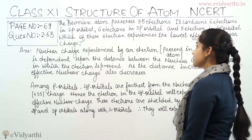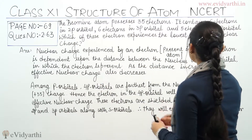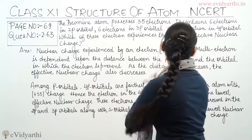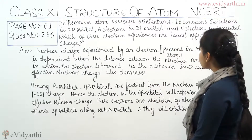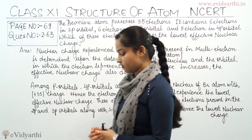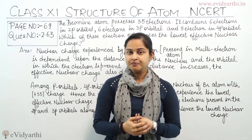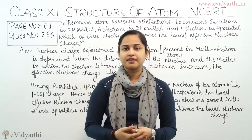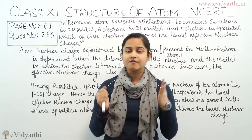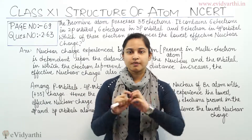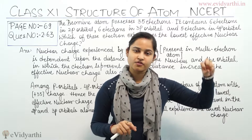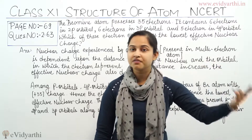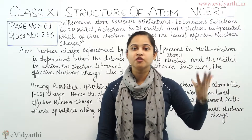The question is: the bromine atom possesses 35 electrons. It contains 6 electrons in 2p orbitals, 6 electrons in 3p orbitals, and 5 electrons in 4p orbitals. Which of these electrons experiences the lowest effective nuclear charge? So in this question, I need to tell which electron, among those present in these orbitals, experiences the least effective nuclear charge.